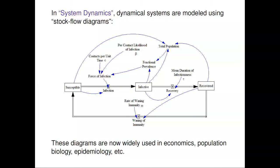How do you calculate the fractional prevalence? You just take the number of infected people and divide it by the total population. How do you calculate the total population? You just sum up all three of these stocks. So we notice there are two types of arrows in this diagram, and they're completely different in nature: the flows, which describe how entities move from one stock to another, and the blue links, which represent the flow of information or computation.